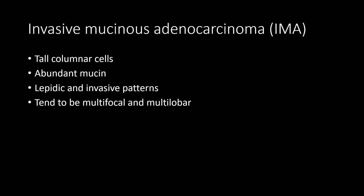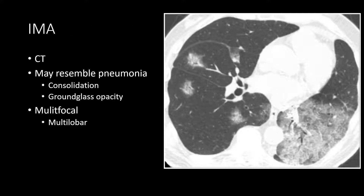Invasive mucinous adenocarcinoma arises from tall columnar cells and produces abundant mucin. It demonstrates lepidic and invasive patterns similar to non-mucinous types, but is characterized by a different cell type and different pathologic stains. These tend to be multifocal and often multi-lobar. The CT appearance can vary from a discrete nodule to multiple nodules, but a common feature is that it can actually resemble a pneumonia. On CT we see areas of ground glass opacity and consolidation, typically multifocal and multi-lobar, as shown with a lobar area of ground glass opacity with intermixed consolidation in one lung and mass-like areas of consolidation in the contralateral lung.